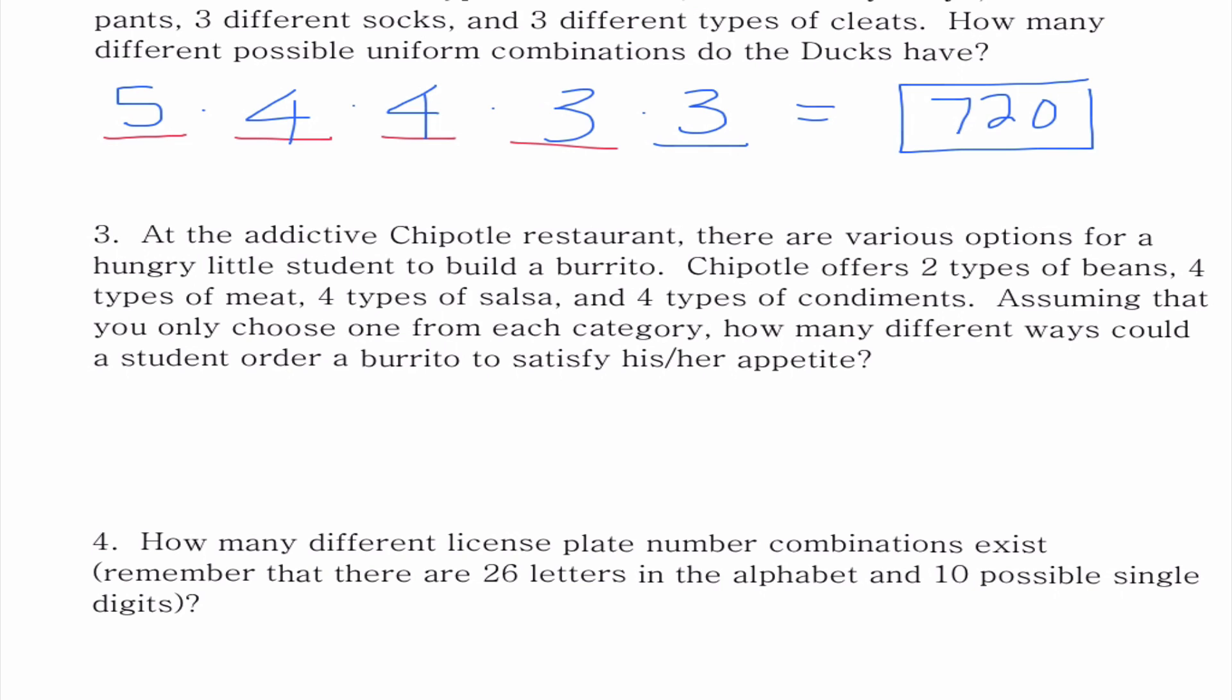Moving on to number three. At the Addictive Chipotle restaurant, there are various options for a hungry little student to build a burrito. Chipotle offers two types of beans, four types of meat, four types of salsa, four types of condiments. Assuming that you only choose one from each category, how many different ways could a student order a burrito to satisfy his or her appetite? I have options for the beans, meat, salsa, and condiments. So there are two types of beans, four types of meat, four types of salsa, and four types of condiments. When we multiply these all together, two times four times four times four is 128.